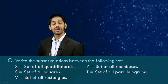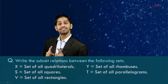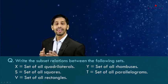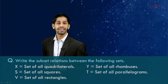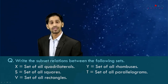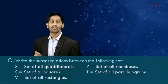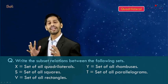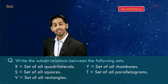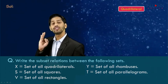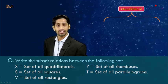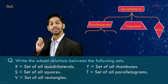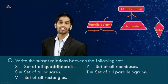Before we understand which set is a subset of which set, let's understand this sum through a diagrammatic representation. We have a quadrilateral, which is any four-sided closed figure. Under quadrilateral we have three geometrical figures: parallelogram, trapezium, and kite.